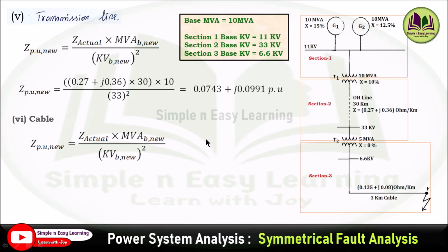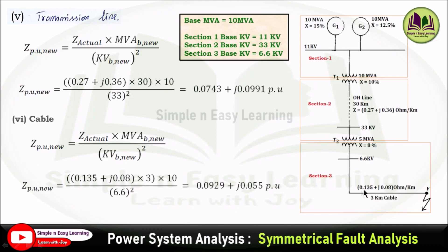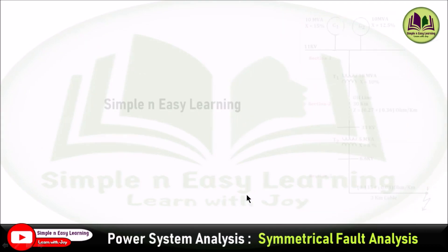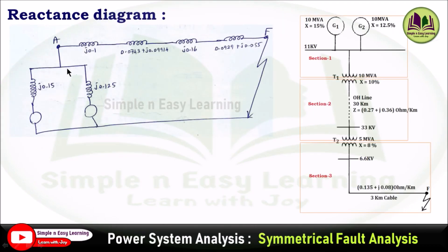For the cable, Z_actual = (0.135 + j0.08) × 3 ohm, with MVA base = 10 and section 3 base kV = 6.6, giving 0.0929 + j0.055 per unit. Substituting all values into the reactance diagram, point A represents the 11 kV bus and point F represents the fault point.